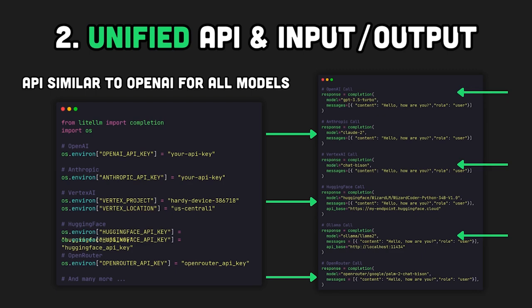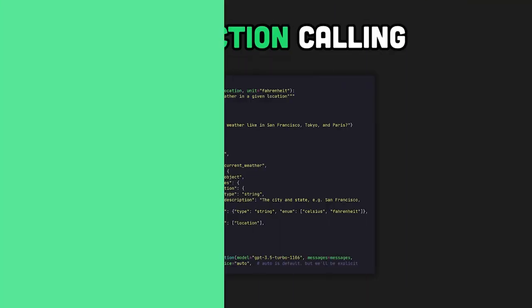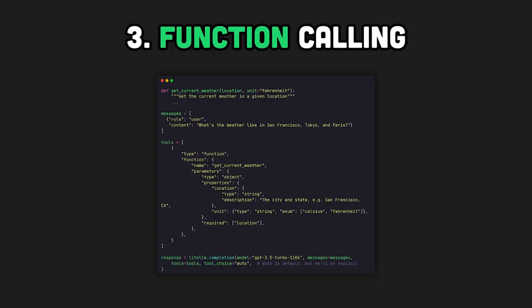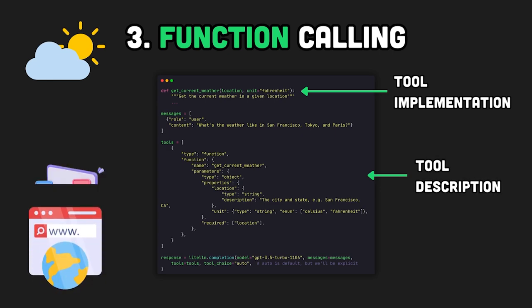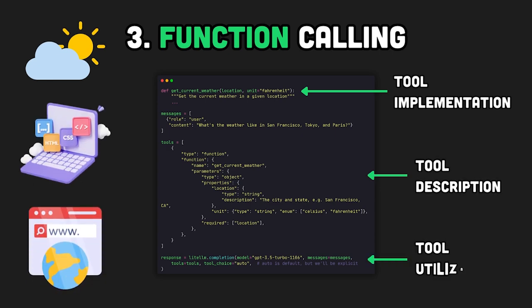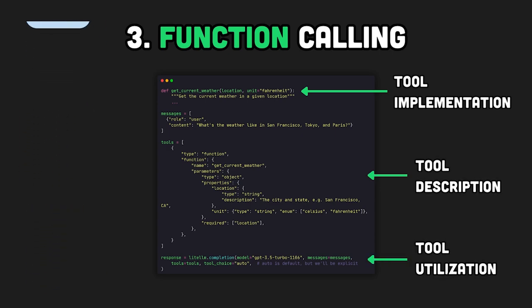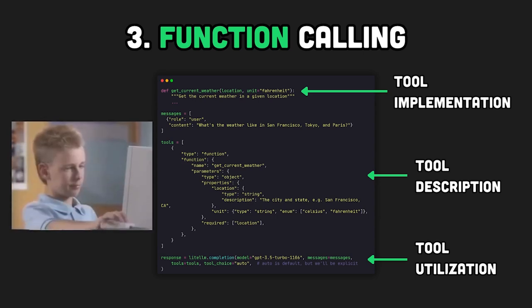Any provider becomes a drop-in replacement and won't affect your application code. Function calling is an important LLM feature, allowing the model to call external tools to perform actions like fetching real-time weather data, browsing the web, or executing code. Not only does LiteLLM support function calling for OpenAI, but it also adds support for other LLMs by adding the function call to the prompt.